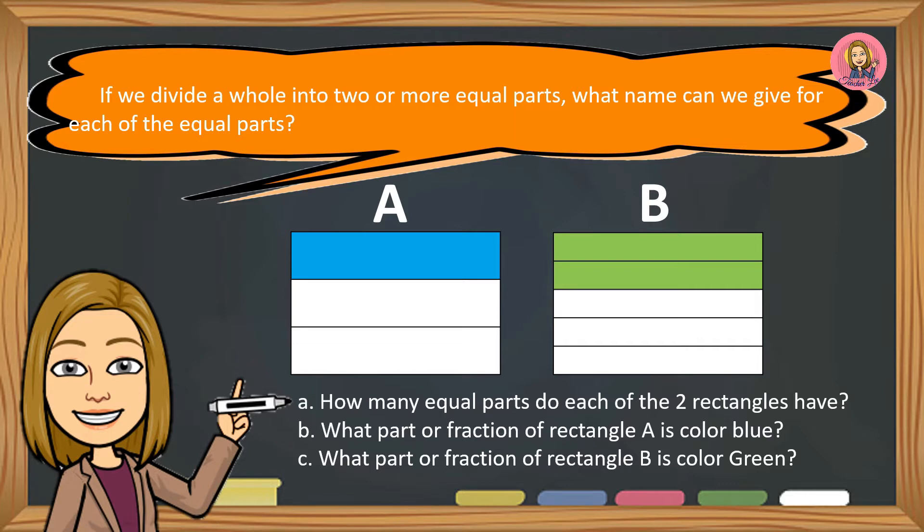How many equal parts do each of the two rectangles have? What part or fraction of rectangle A is color blue? And what part or fraction of rectangle B is color green?